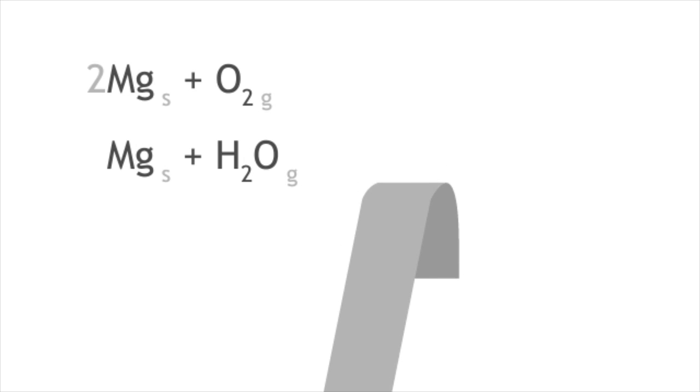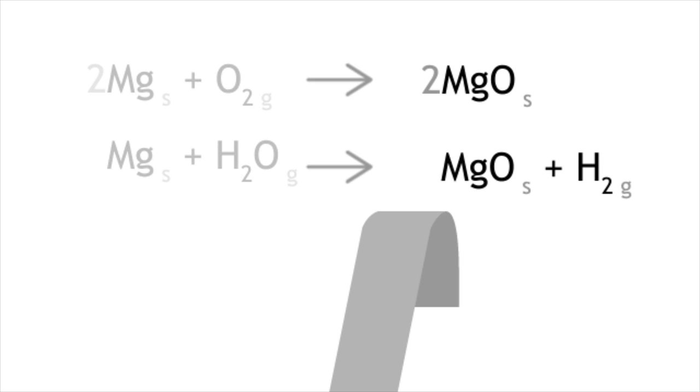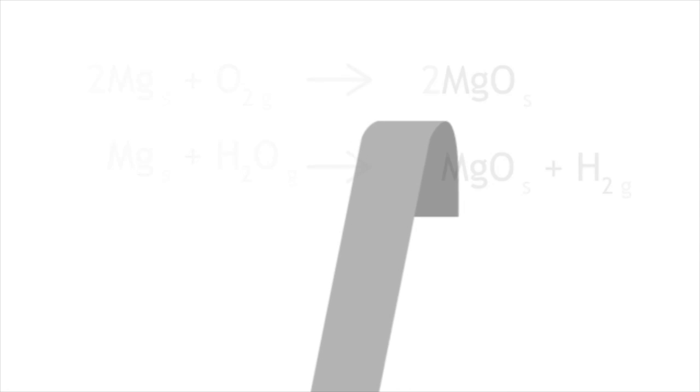Magnesium is shiny and silver, but you will see that your magnesium strip may be dull. This is due to the formation of an oxide layer from exposure to air. Simply clean it with steel wool to remove as much of the oxide layer as possible.